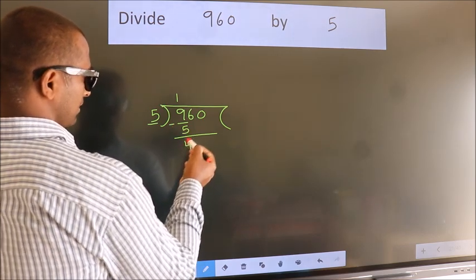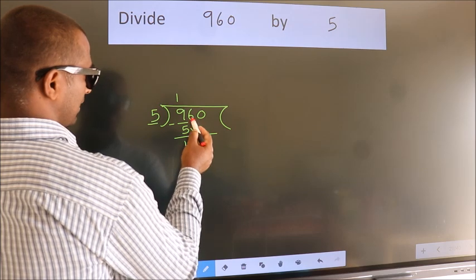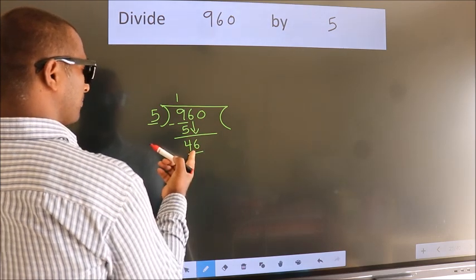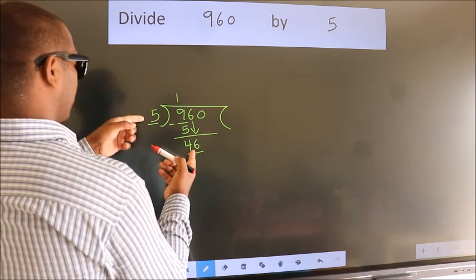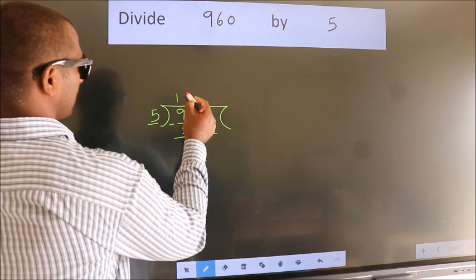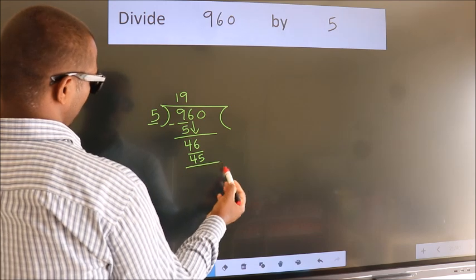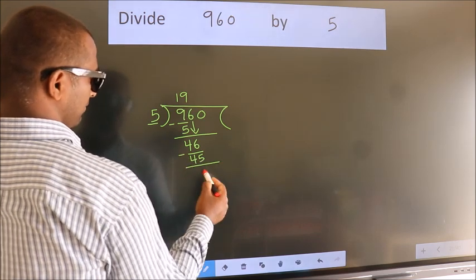After this, bring down the beside number. So 6 down. So 46. A number close to 46 in the 5 table is 5 nines is 45. Now we subtract. We get 1.